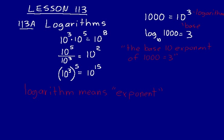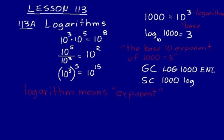Your scientific or graphing calculator is programmed to find the base 10 logarithm or exponent for any number. On most graphing calculators, you hit the LOG key, type in your number — in this case, 1,000 — then hit enter, and you should get 3. On a scientific calculator, you usually type in the number first, then hit the LOG key, and it will produce the value automatically without needing to hit the equal sign.